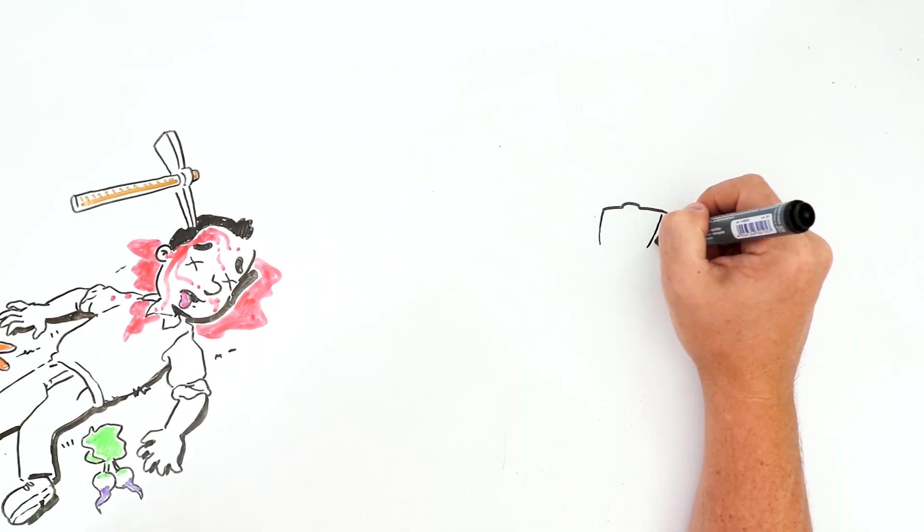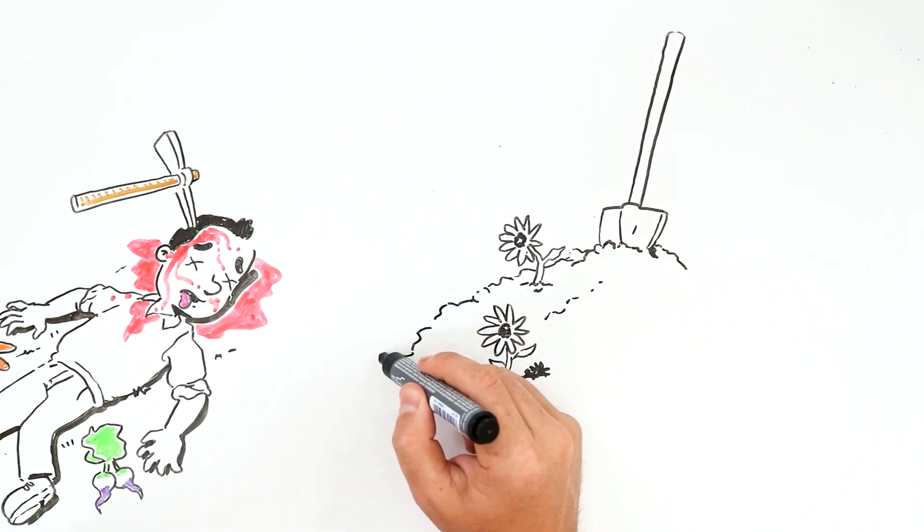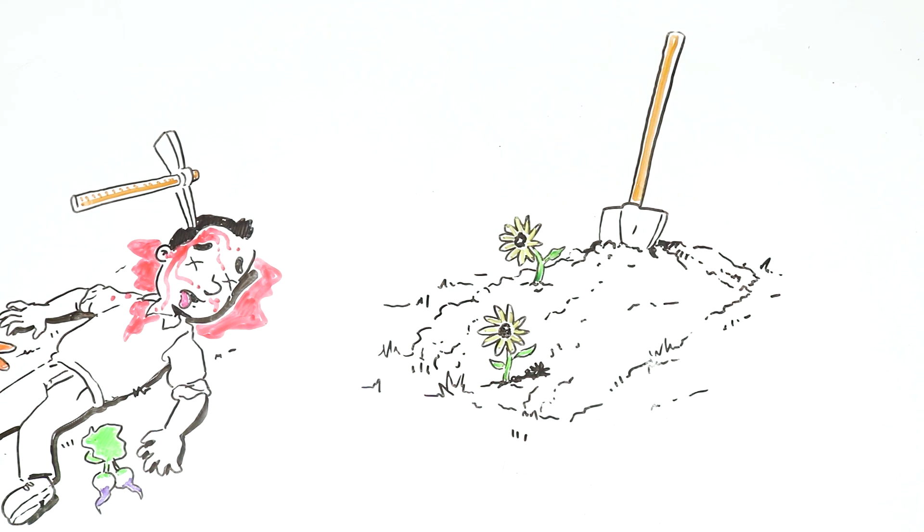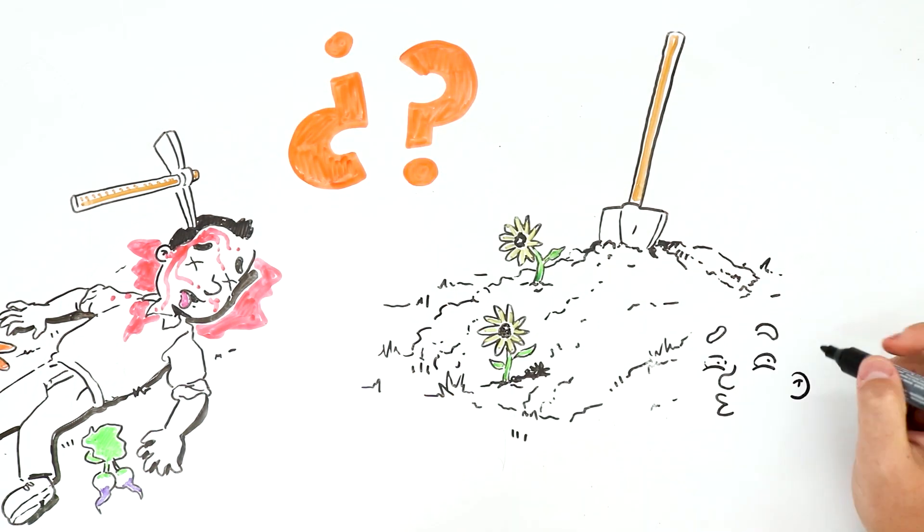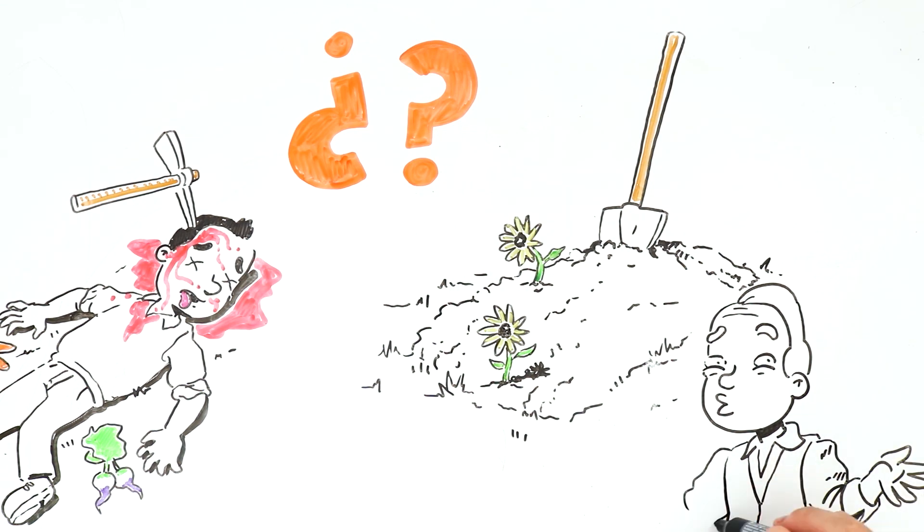To get rid of the body, the farmer buried it under his garden to use it as fertilizer. People in the town soon noticed the man had disappeared, but the farmer simply kept on with his life, and always denied having seen the man whenever he was asked.